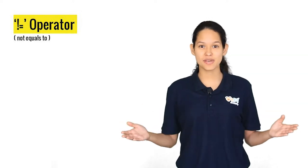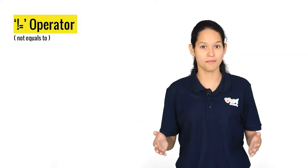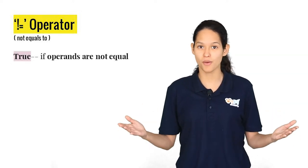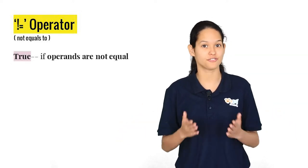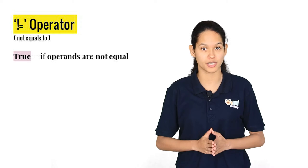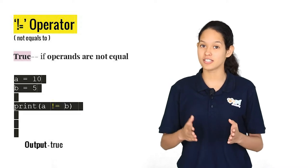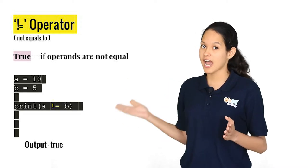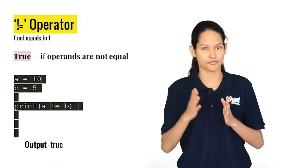Next we have the not equal to operator. It compares both the operands and checks if they are not equal. You can try this code out and see the difference.